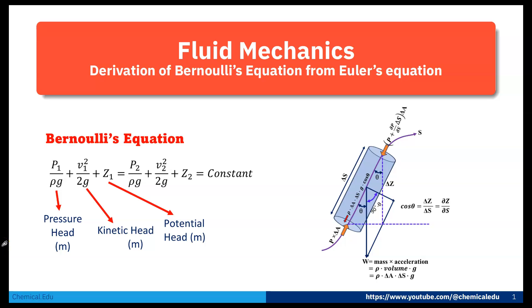Today I will talk about the derivation of the Euler equation. From the Euler equation I will derive Bernoulli's equation. Bernoulli's equation for two different points is: P1/ρg + V1²/2g + Z1 = P2/ρg + V2²/2g + Z2 = constant.